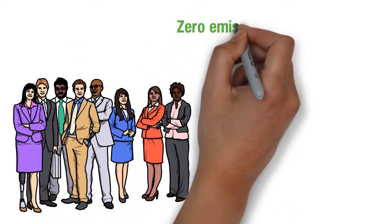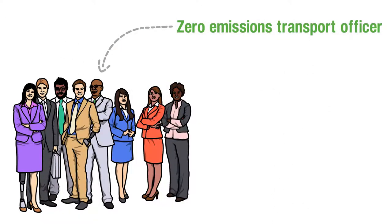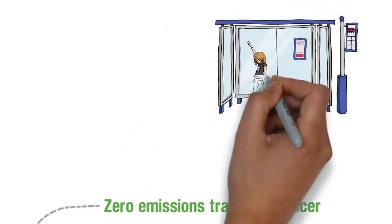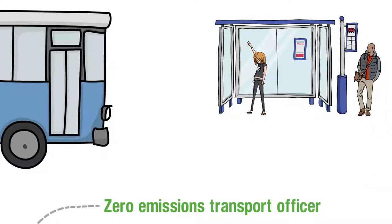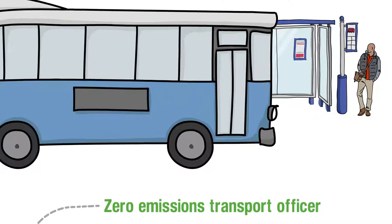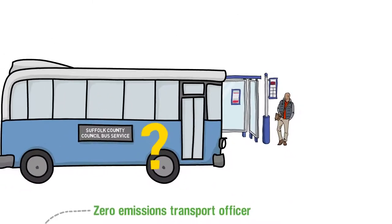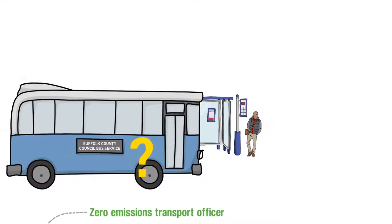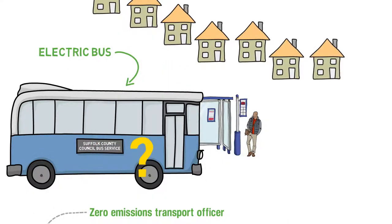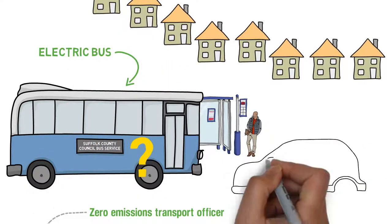Greens propose to hire a zero emissions transport officer to scope out where demand is for bus routes, run a feasibility study on establishing our own bus company to serve rural areas if commercial bus companies can't, and plan for zero emission transport infrastructure, including electric buses focused around where housing growth is.